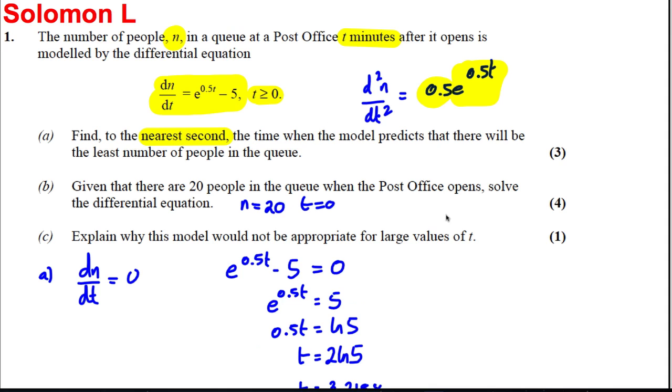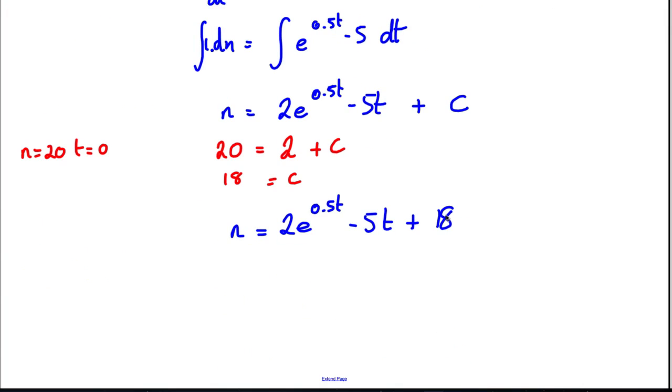Okay, the last part. Explain why this model would not be appropriate for large values of t. Well, for part C, if t tends to infinity, we have to look at what happens to each of these things. Now this tends to infinity much more quickly than 5t does, so the whole thing tends to infinity very quickly. So as t tends to infinity, n tends to infinity quickly, which is not realistic.